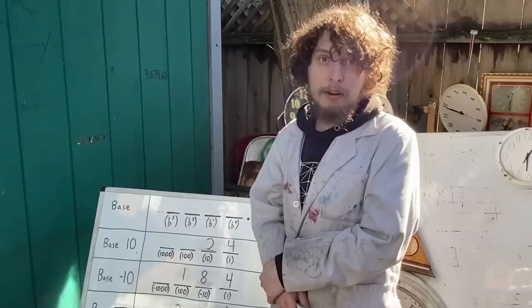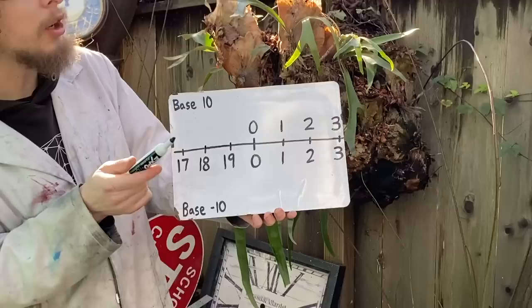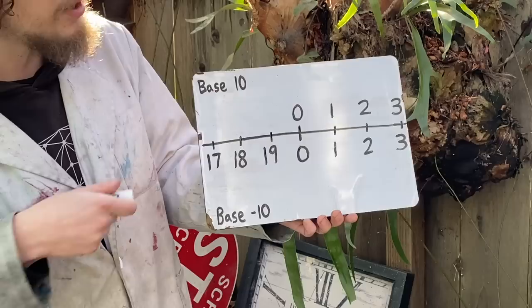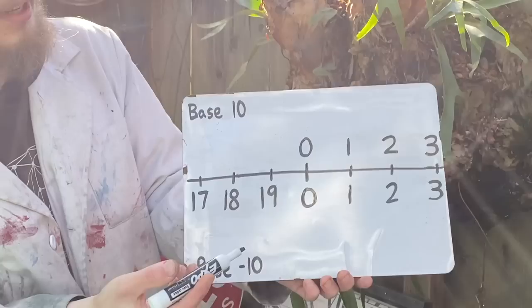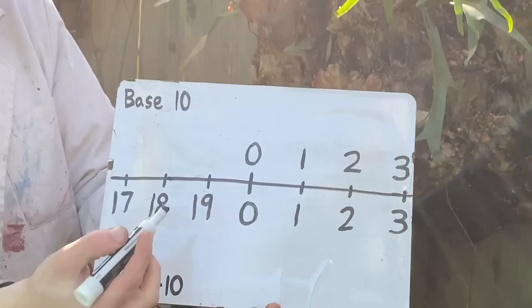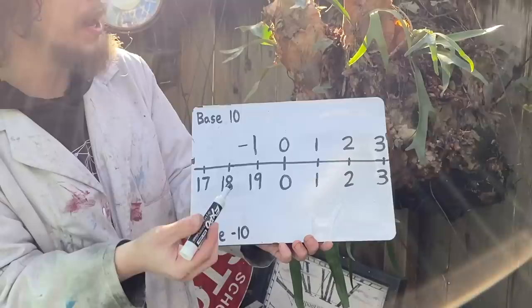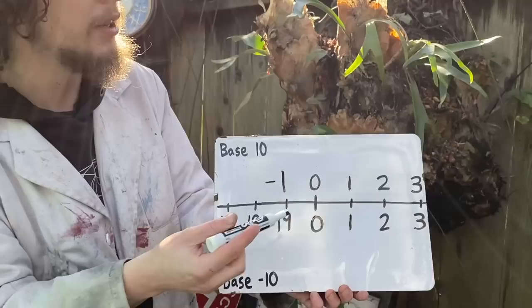Some of these stranger bases not only can use a finite string of digits to represent any positive integer, like base 10 could, but sometimes can represent new realms of integers with simple strings as well. Like base negative 10 can convey the number negative 1 with the string 19, a finite string of digits that didn't require the minus sign. So base negative 10 somehow manages to use these finite strings to not only describe the positive direction of integers, but the negative direction at the same time.